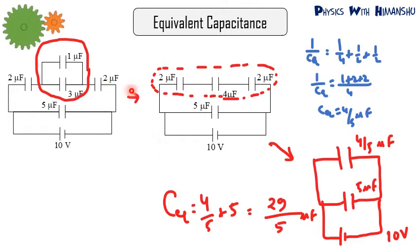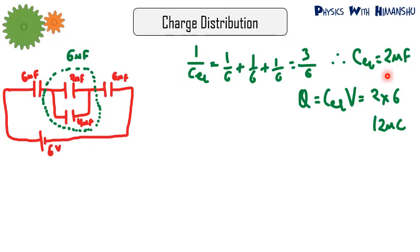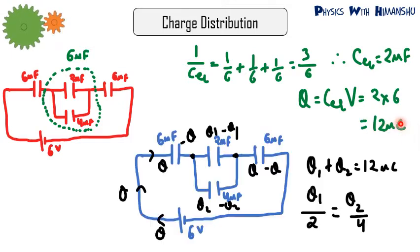Now let's talk about how to distribute charge. Suppose we have four capacitors: 6 µF, 2 µF, 4 µF, and 6 µF. The 2 µF and 4 µF are in parallel giving 6 µF, and then the three 6 µF capacitors are in series: 1/C_eq = 1/6 + 1/6 + 1/6 = 3/6, so C_eq = 2 µF. The charge released by the battery is Q = C_eq × V = 2 µF × 6 V = 12 µC.